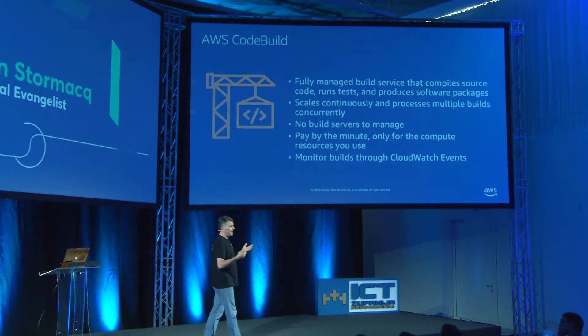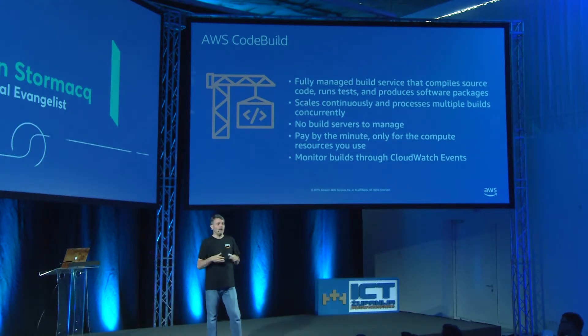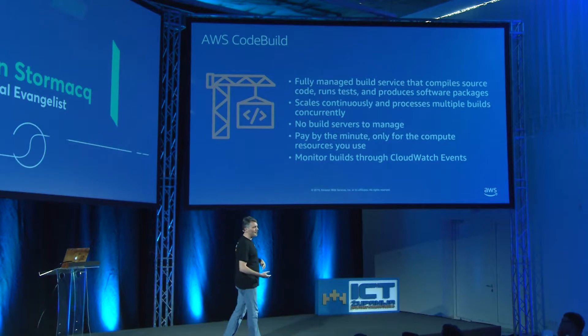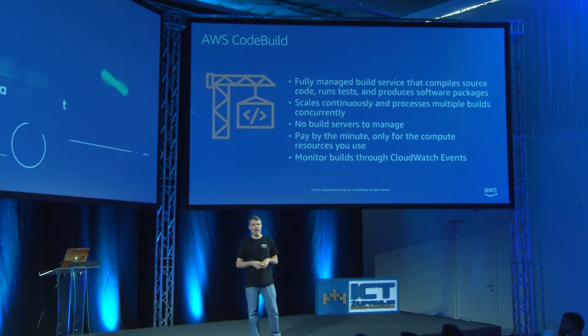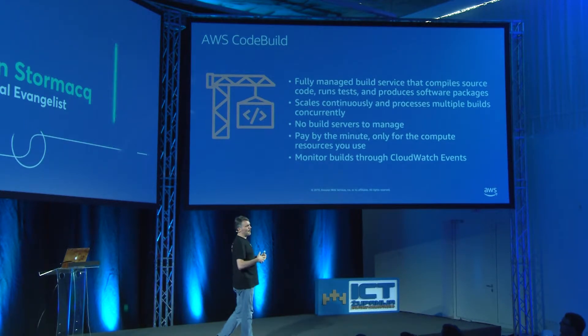Ideally you should have an orchestration system that detects a change in your Git repository and triggers a build. On AWS you can use any favorite tool — Jenkins on EC2, for example. But if you run your own Jenkins instance, you need to manage that EC2 instance: scalability, availability, backups, patching the OS and Jenkins itself. That brings no added value. So we have CodeBuild — a managed, serverless build service where we handle the infrastructure, scaling, and availability. You just provide a script file to build your application, and that's it.